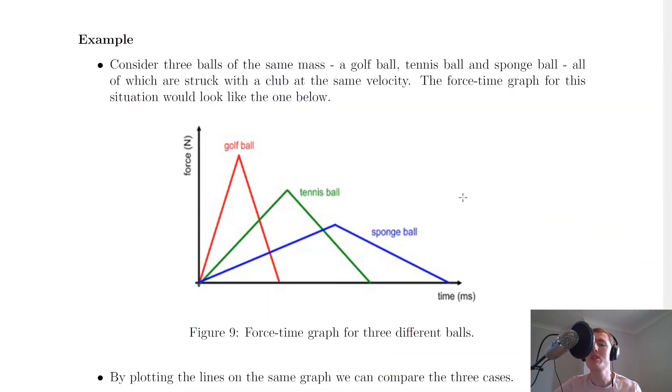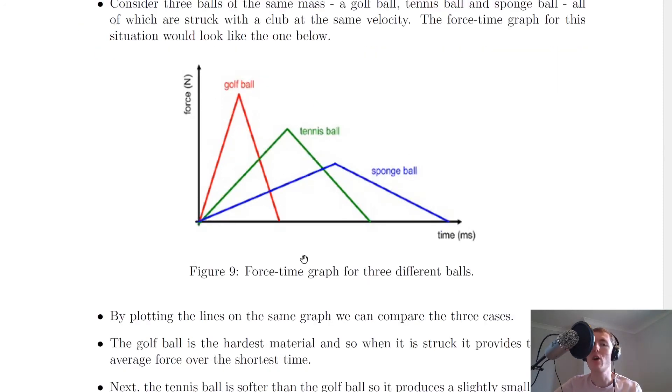An example for force-time graphs to consider is this. Consider three balls of the same mass: a golf ball, tennis ball and sponge ball, all of which are struck with a club at the same velocity. The force-time graph for this situation would look like the one below. The red line is for the golf ball, the green line for the tennis ball, and the blue line for the sponge ball. By plotting the lines on the same graph we can compare the three cases.